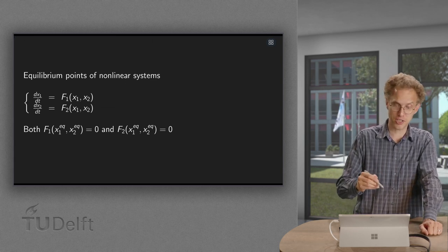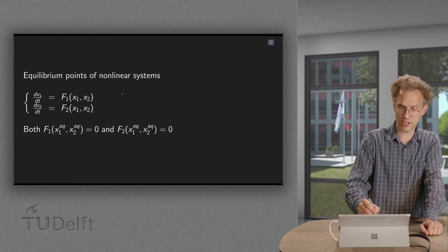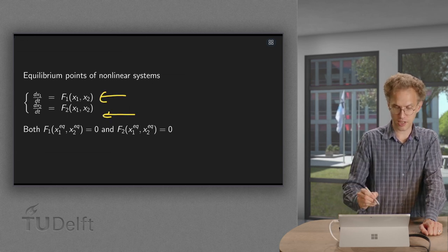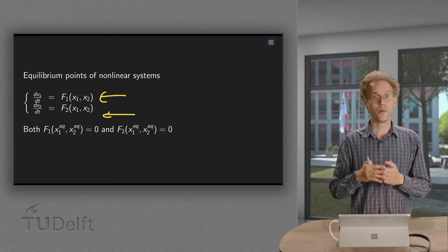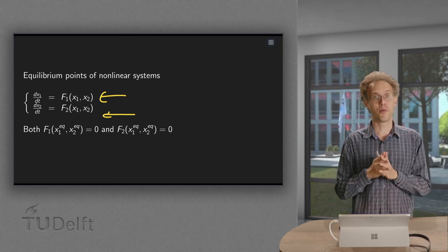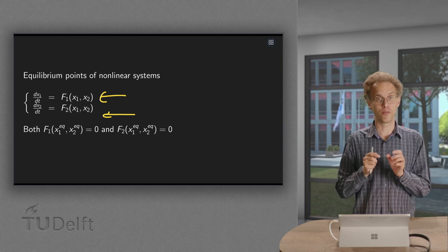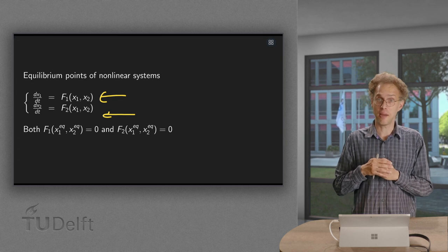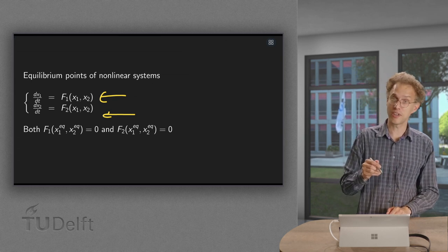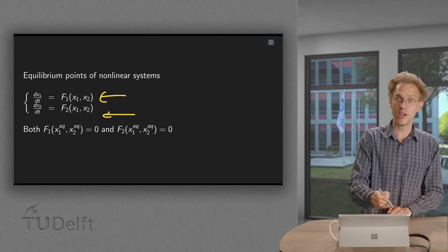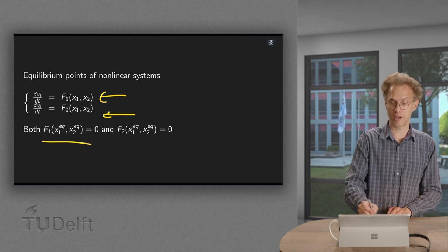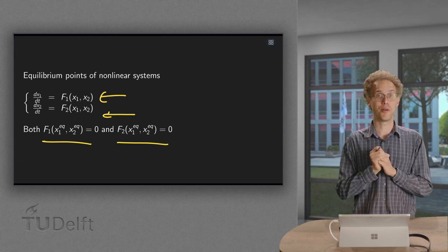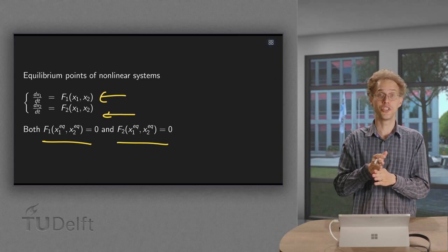So let's take a small system dx1/dt equals f1 and dx2/dt equals f2. For an equilibrium point, we want the equilibrium point to be constant. So we are looking for points where x1 and x2 are constant. That means their time derivatives have to be zero. So both right-hand sides need to be zero. In equilibrium points, both f1 and f2 have to be zero. That is what the equilibrium point is. If you are there, you stay there.